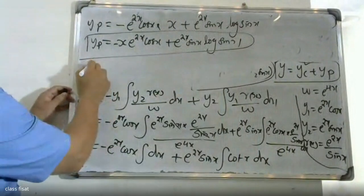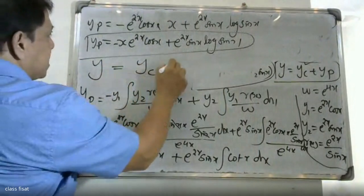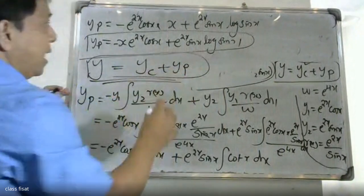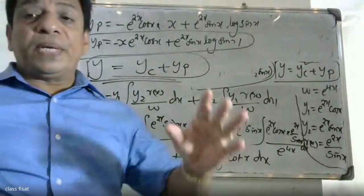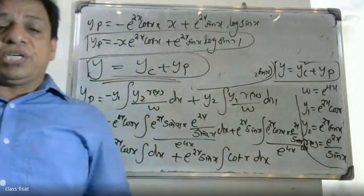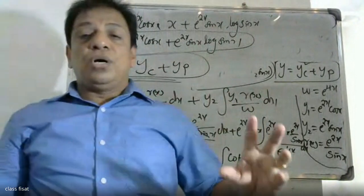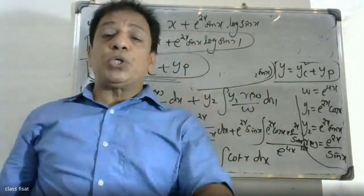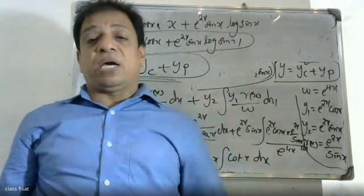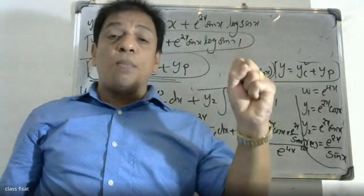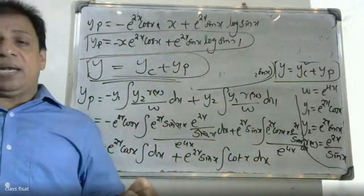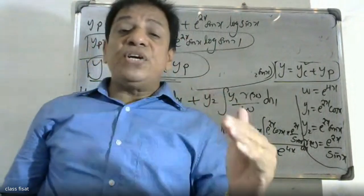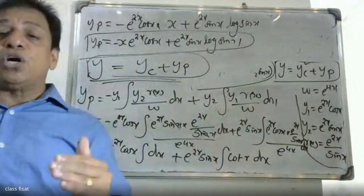Therefore the general solution is y = yc + yp. This is the final answer. The complementary function yc is critical, and we combine it with the particular integral yp to get the complete solution.